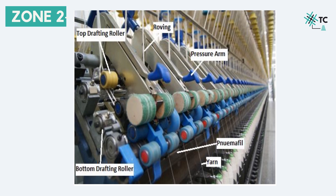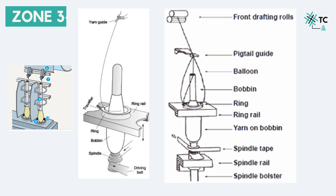Coming down to zone three. This is where the twisting and the winding of yarn takes place on the bobbin. After the resulting thin ribbon of fibers leaves the delivery roller, the twist necessary for imparting strength is provided by the spindle, which is rotating at a high speed. Pause the video and have a look as I mention the name of the parts very carefully. There is a spinning ring and a traveler, as we saw in the start of the video, which is mounted on the ring rail. In the process, each rotation of the traveler on the spinning ring produces a twist in the yarn. The yarn coming from the front rollers of the drafting zone is threaded through this traveler and fastened to the bobbin.